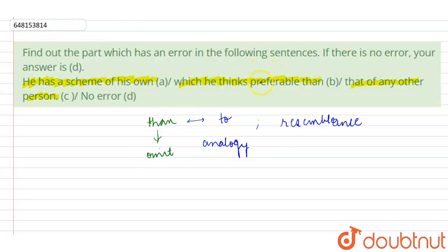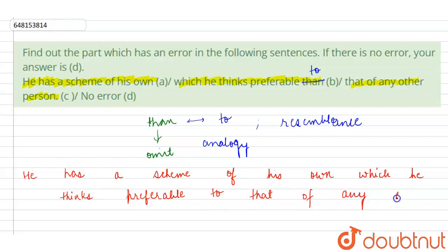So what is our corrected sentence? He has a scheme of his own which he thinks preferable to that of any other person.